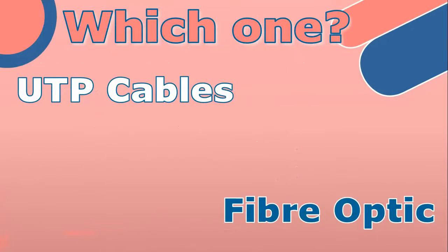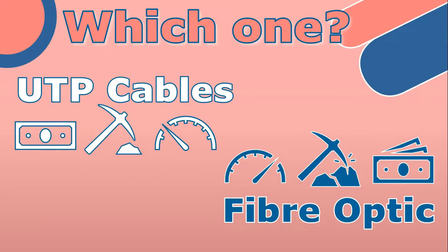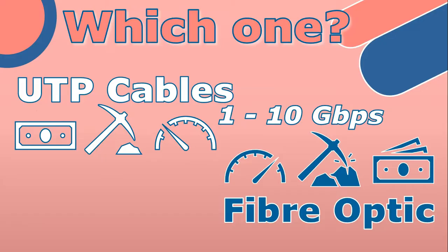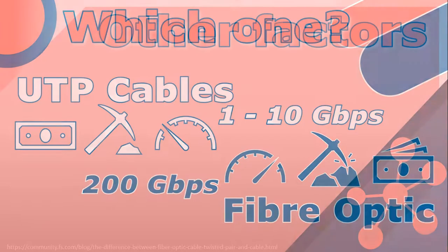In general, UTP cables are more cost-effective and easier to install than fiber optic cables. However, fiber optic cables offer faster speeds and greater bandwidth but can be damaged easily. UTP cables typically have a maximum bandwidth of one gigabit per second over short distances and up to 10 gigabits per second over distances of up to 100 meters. In contrast, fiber optic cables can support much higher bandwidths, with some types capable of transmitting data at speeds of up to 200 gigabits per second over long distances.